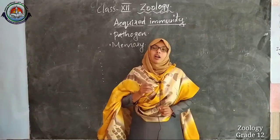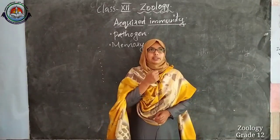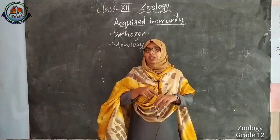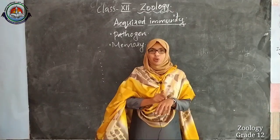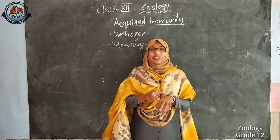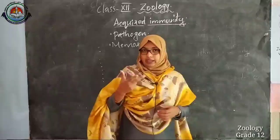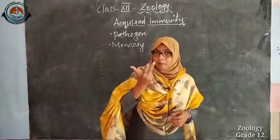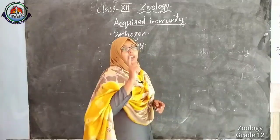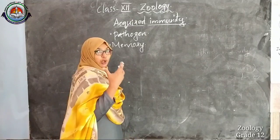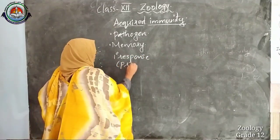Whenever our body encounters a pathogen, some sort of response is elicited. In ninth standard, you might have studied itching, inflammation, or redness. When a mosquito bites us, some swelling and reddish formation will occur. All these are the primary responses — the responses elicited by our body when a pathogen enters.